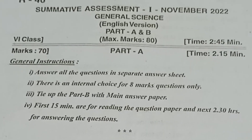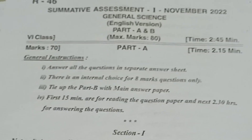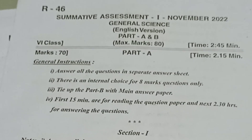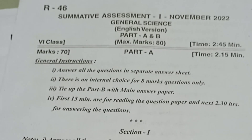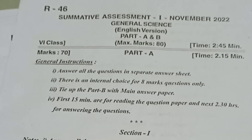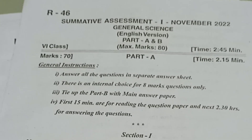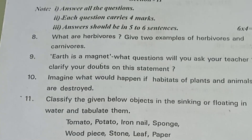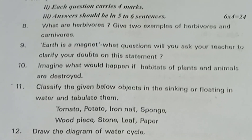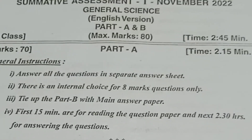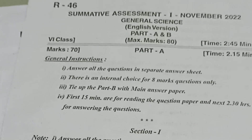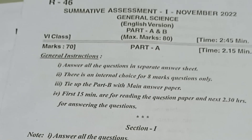Second instruction: write answers in a separate answer sheet. Third instruction: internal choice is available for 8-mark questions only. Fourth instruction: tie up Part B with the main answer paper. First 15 minutes are for reading the question paper, and the next 2 hours 30 minutes are for answering the questions.